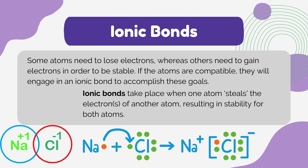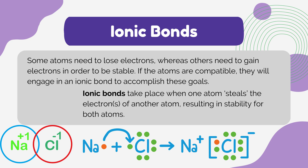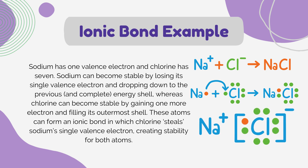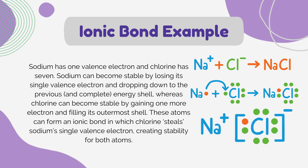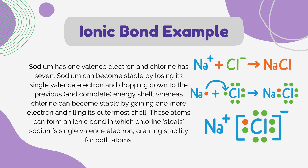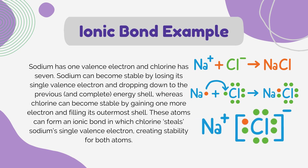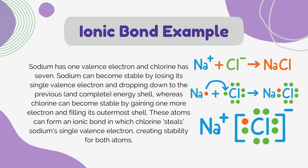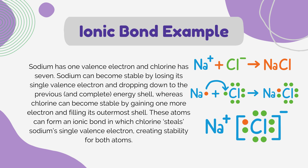In an ionic bond, one atom typically donates one or more electrons to another atom, resulting in the formation of positively charged ions (cations) and negatively charged ions (anions). For example, sodium has one valence electron and chlorine has seven. Sodium can become stable by losing its single valence electron and dropping down to the previous, complete energy shell, whereas chlorine can become stable by gaining one more electron and filling its outermost shell. These atoms form an ionic bond in which chlorine takes sodium's single valence electron, creating stability for both atoms.